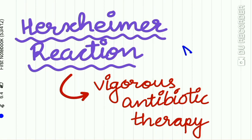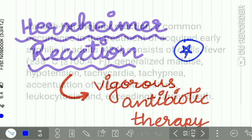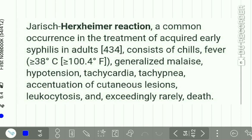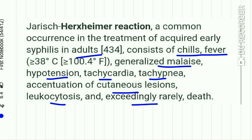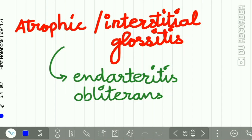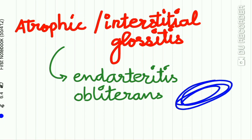The Jarisch-Herxheimer reaction occurs due to vigorous antibiotic therapy given in syphilis. It is a common occurrence in the treatment of acquired early syphilis in adults and is characterized by chills, fever, generalized malaise, hypotension, tachycardia, tachypnea, accentuation of cutaneous lesions, leukocytosis, and exceedingly rarely death. Another feature is atrophic or interstitial glossitis caused by endarteritis obliterans — obliteration of the blood vessels.